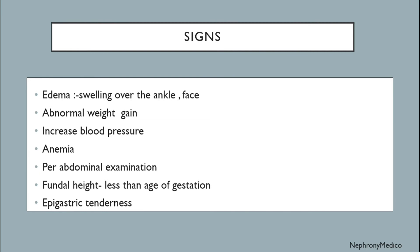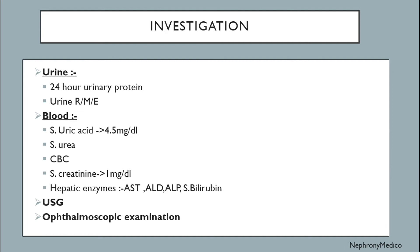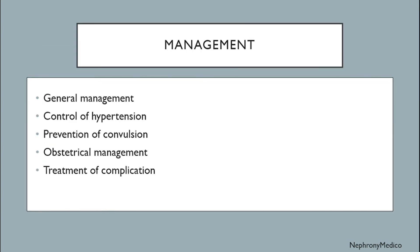On abdominal examination, fundal height less than dates of gestation, and epigastric tenderness. Investigations include: urine — 24-hour urinary protein and urine RME; blood — serum uric acid more than or equal to 4.5 milligrams per deciliter, serum urea, CBC, serum creatinine, hepatic enzymes like AST, ALT, ALP, and serum bilirubin; ultrasonography; and ophthalmoscopic examination.